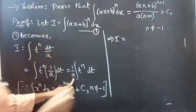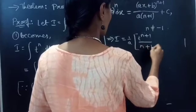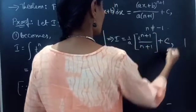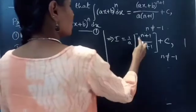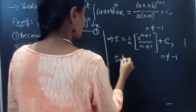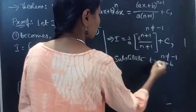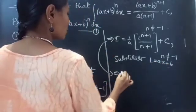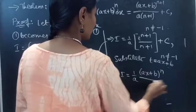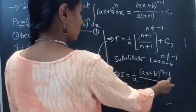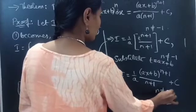We get I equals 1/A times t^(n+1) divided by (n+1), plus the constant C, for n not equal to minus 1. Now we will replace t by substituting t equals Ax + b. This becomes I equals 1/A times (Ax + b)^(n+1) divided by (n+1), plus C, for n not equal to minus 1.